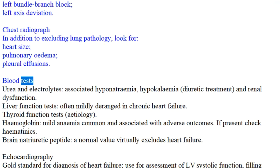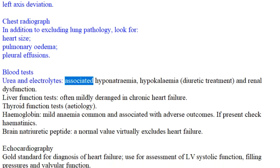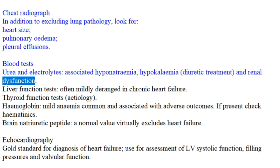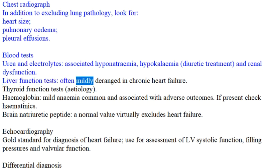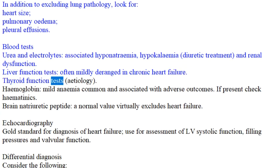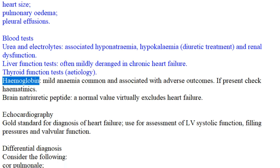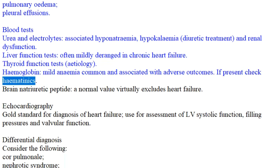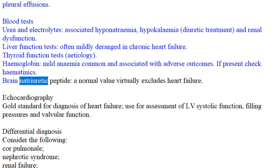Blood tests: urea and electrolytes may reveal hyponatremia, hypokalemia from diuretic treatment, and renal dysfunction. Liver function tests are often mildly deranged in chronic heart failure. Check thyroid function tests as an etiology. Hemoglobin: mild anemia is common and associated with adverse outcomes — if present, check hematinics. Brain natriuretic peptide (BNP): a normal value virtually excludes heart failure.